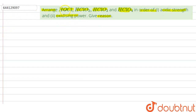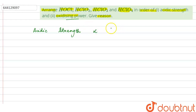In this question, we have to arrange HOCl, HOClO₂, HOClO₃ and HOClO₄ in order of acidic strength and oxidizing power. Here, acids of chlorine are given. We know that acidic strength is directly related to the oxidation state of the halogen, which is chlorine — the central atom. More will be the oxidation state of chlorine, more electronegative will be the element and its tendency to accept electrons will be more, so its acidic strength will be more.